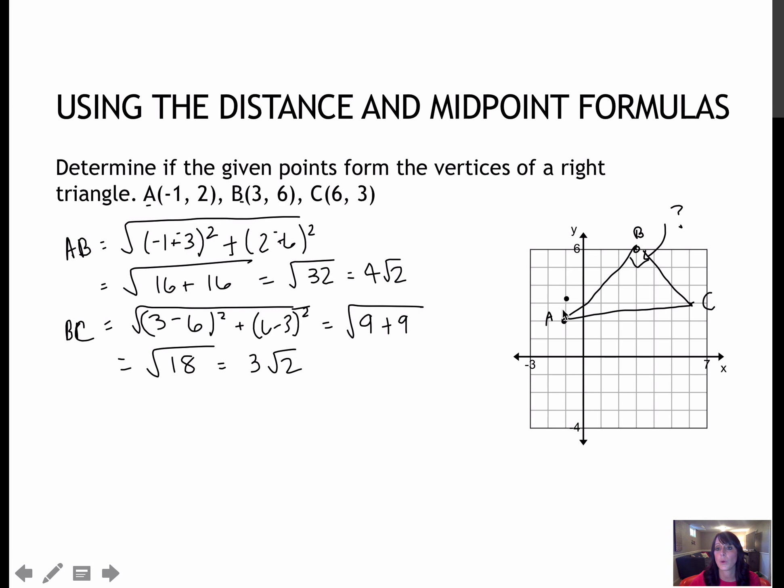And then the last one would be the long side. This would be the hypotenuse if it's a right triangle. So that would be AC. Again, just using the distance formula, (-1 - 6)² plus (2 - 3)², which gives me 49 plus 1, which would be radical 50, which would be 5 radical 2.